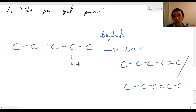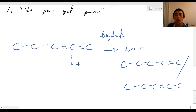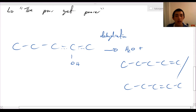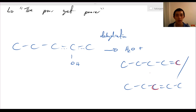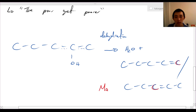The double bond could go either left or right. This carbon is connected to only one carbon, while this carbon is connected to two carbons. Zaitsev's rule says the carbon connected to more carbons will be the one that gets the double bond. Therefore, this is the major product and the other is the minor.